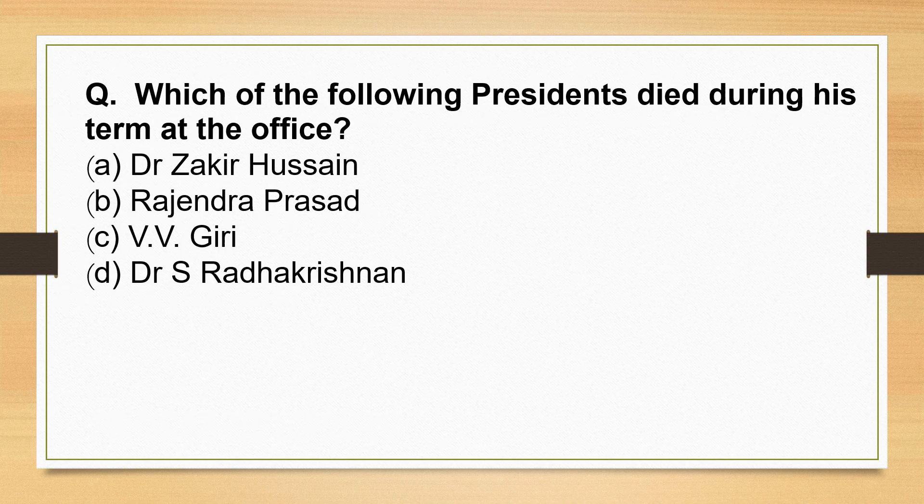Which of the following Presidents died during his term in office? Dr. Zakir Hussain. He took office on 13th May 1967 and passed away on 3rd May 1969. He was the third President of India and was succeeded by V.V. Giri.